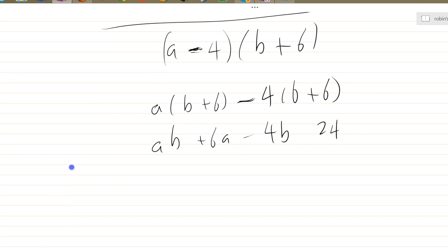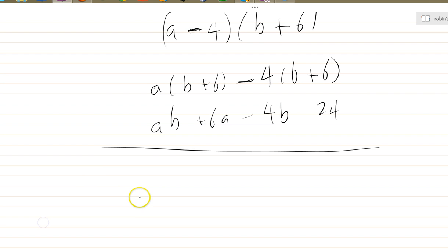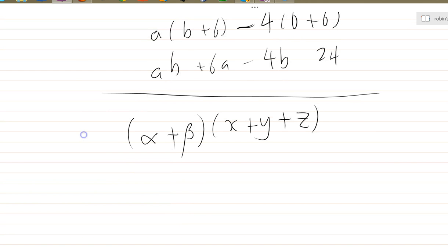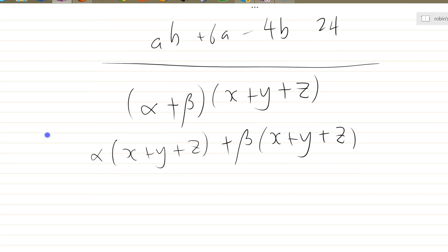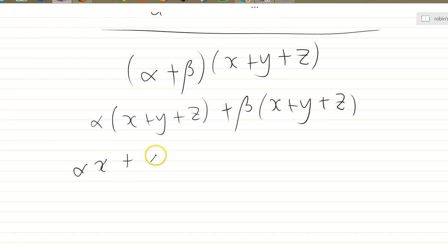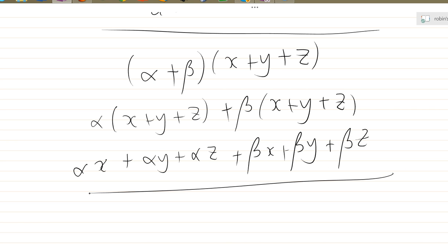I'm going to do one more example: alpha plus beta times x plus y plus z. Let's have a look at that. That's alpha times x plus y plus z plus beta times x plus y plus z. I'm taking a little bit of liberty here because I've only really talked about this expansion in terms of brackets with two things in. And here I've got three: x, y, z. But it's the same idea. Alpha x plus alpha y plus alpha z plus beta x plus beta y plus beta z. And there's your answer. I'll stop there. This is too long anyway.